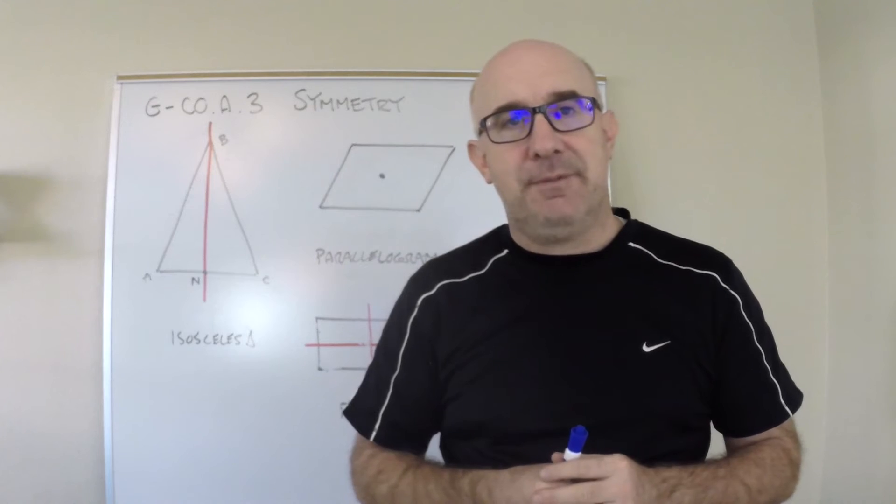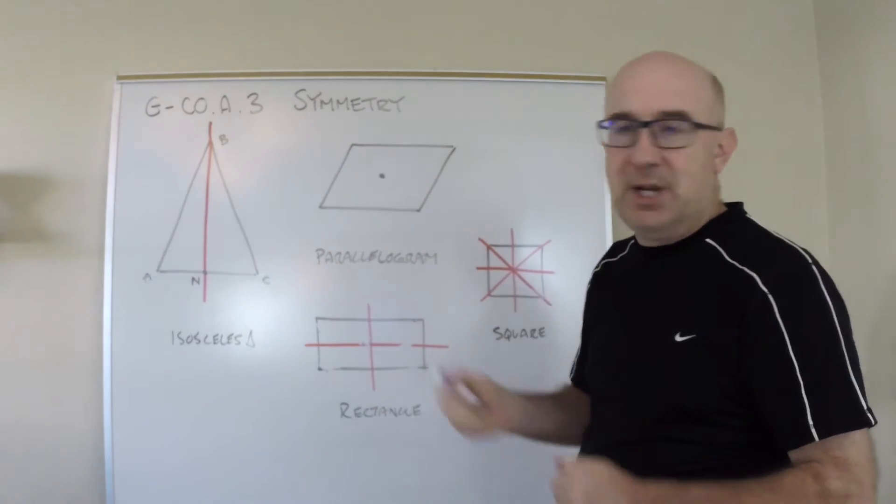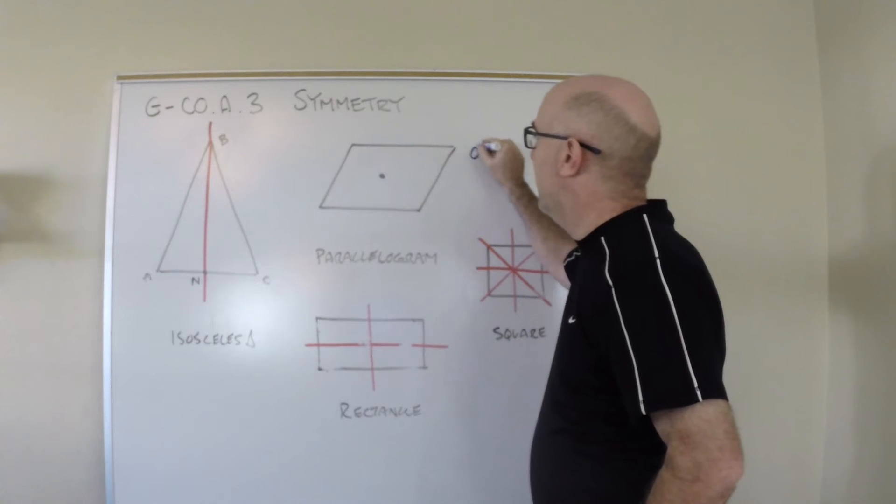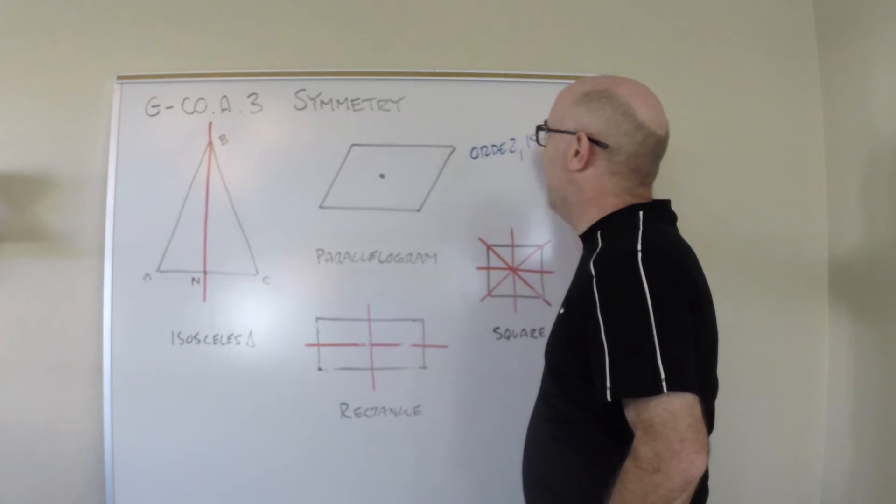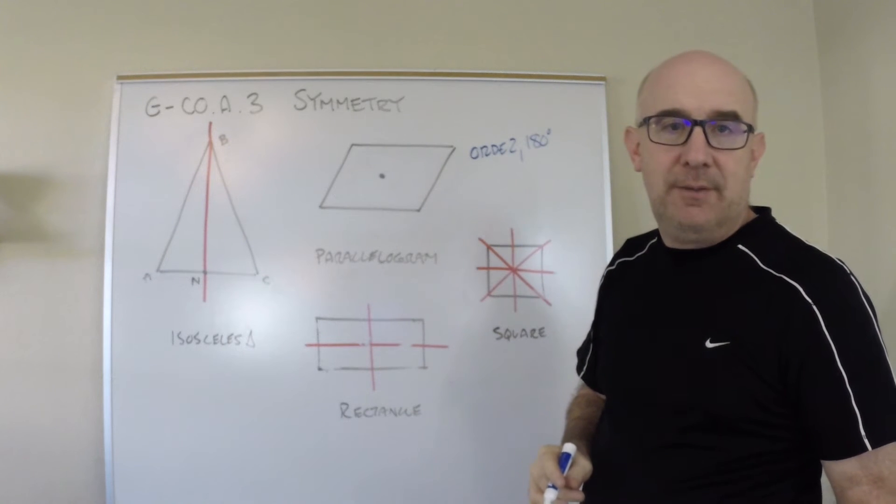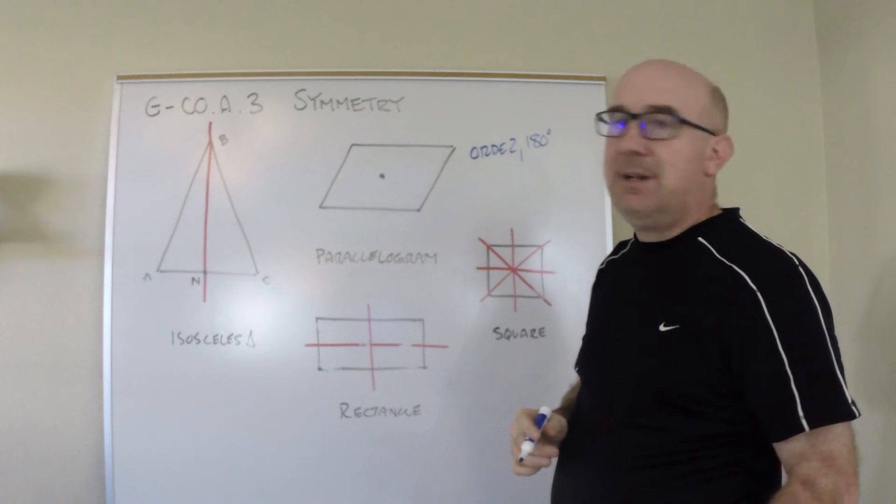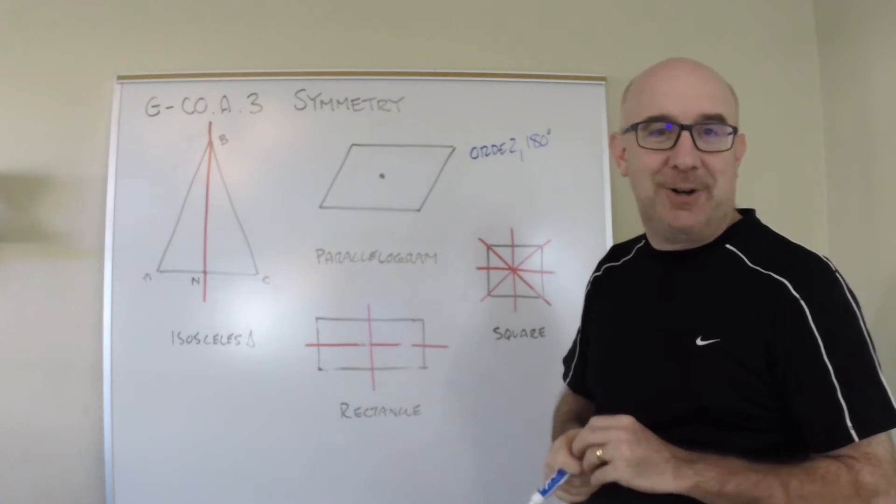Let me give you an example of that. We learned that a parallelogram has a rotational order of 2, and that means it has a rotational angle of 180 degrees. So think about the things we typically prove about a parallelogram.